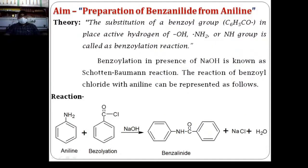Dear friends, what is meant by benzoylation? Benzoylation is nothing but replacement or substitution of a benzoyl group — that means C6H5CO group — in place of active hydrogen. It may be from an OH group, primary amine, or secondary amine group. Such a reaction is known as a benzoylation reaction, that means substitution of a benzoyl group in place of active hydrogen.